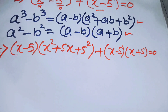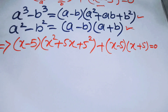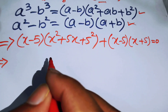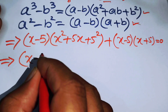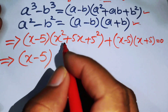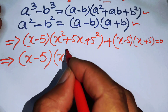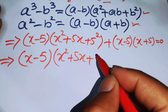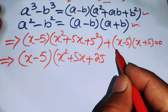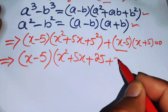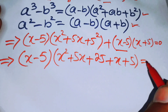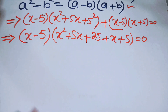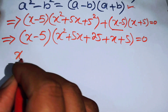We now take (x minus 5) as a common factor from both terms, so it becomes (x minus 5) times [(x squared plus 5x plus 25) plus (x plus 5)] equals 0.